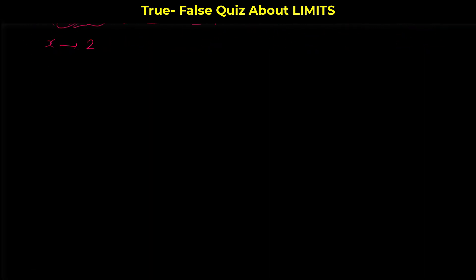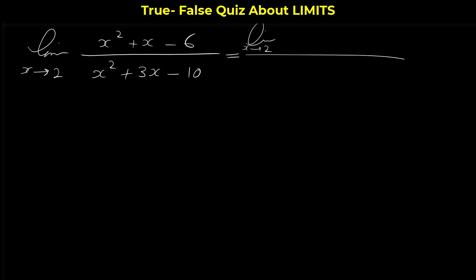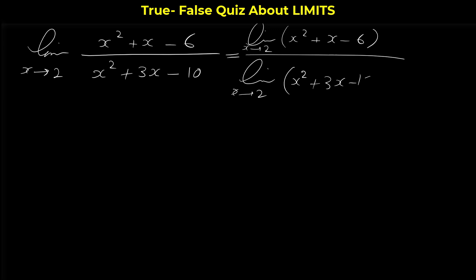Let's do another example: the limit as x approaches 2 of (x²+x-6)/(x²+3x-10) is equal to the limit as x approaches 2 of the numerator over the limit as x approaches 2 of the denominator (x²+3x-10). Is this statement true or not?